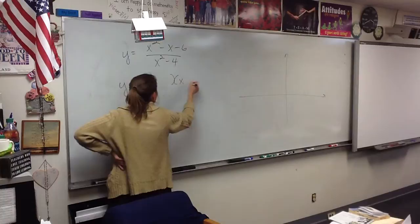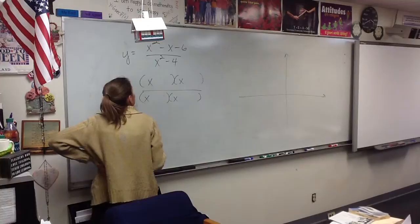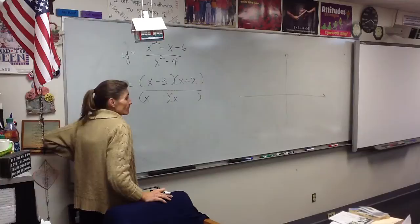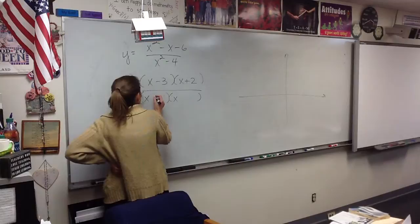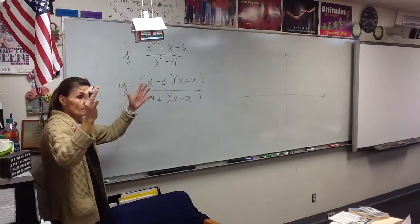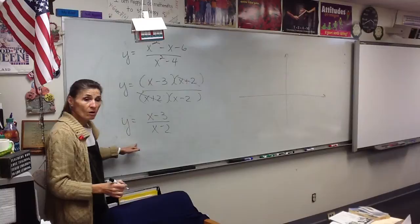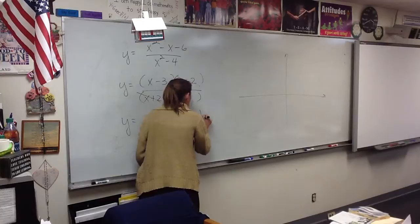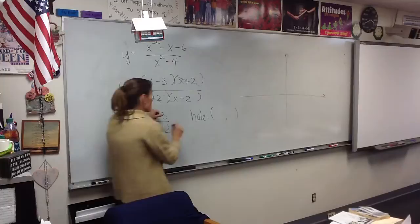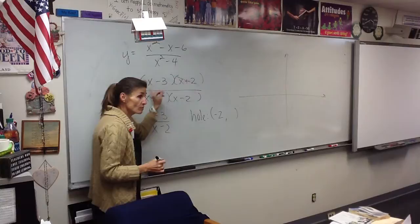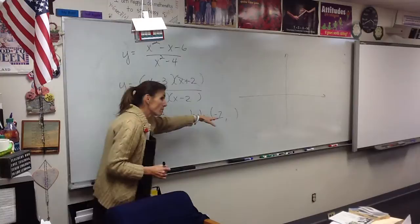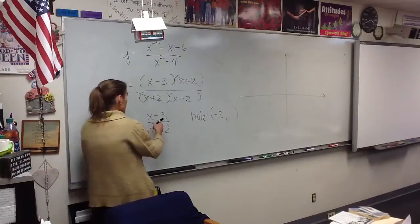All right, who remembers how we start? We're going to factor. So, how does my top factor? x minus three times x plus two. I heard somebody say it. How about the bottom? x minus two times x plus two. Beautiful. What do you notice? We have a hole. Our problem reduces to this, which means we have a hole. Where? Where will that hole be? Where x is negative two. Right? Make sure that's clicking with you. You have a hole at negative two.